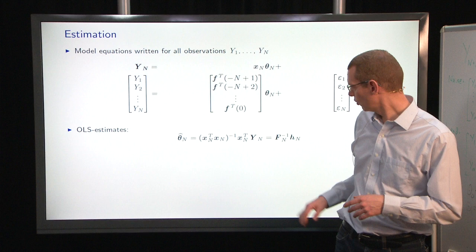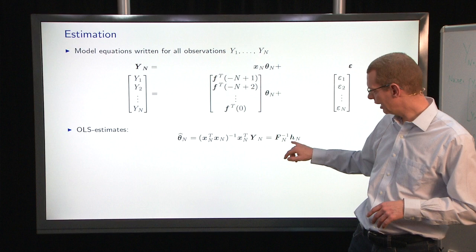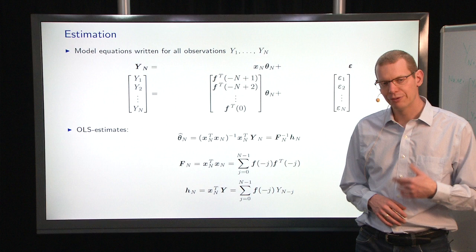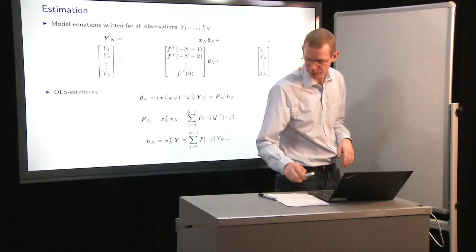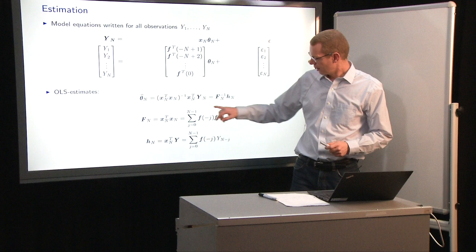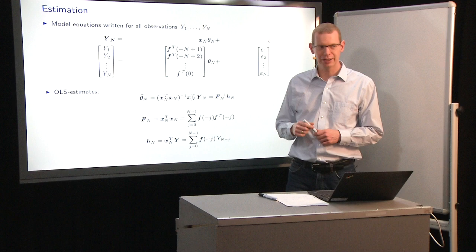So, we look at this formulation where we have theta n as Fn inverse, Fn representing X transpose X, and Hn that represents X transpose Y. So, if we look at this Fn, what we have is that it actually is a sum like what we have here. And let me just explain how this sum look like, because we have this matrix here.